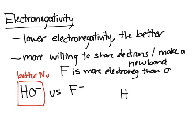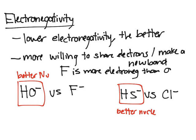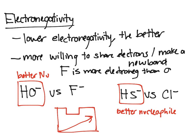Another example: HS⁻ versus Cl⁻. Since chlorine is more electronegative, it is less willing to share electrons or make a bond. Therefore, the sulfur in HS⁻ is more willing to bond with a carbon, making HS⁻ the better nucleophile. Remember, electronegativity increases toward the top-right corner of the periodic table, where fluorine sits.